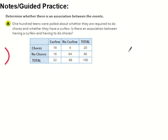So we're going to determine whether there's an association between a specific set of events. Here we have a two-way table — 100 teenagers were polled about whether they were required to do chores and whether they had a curfew. We want to know if there's an association between having a curfew and having to do chores — those are the two categories. The total is 100.